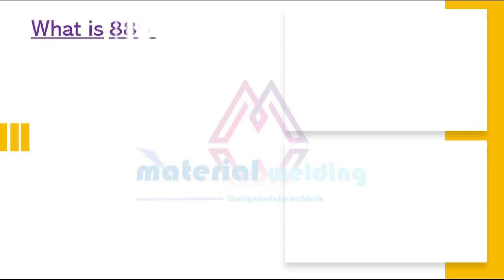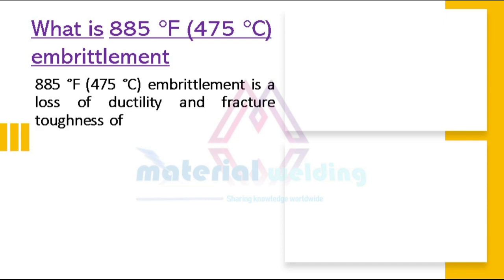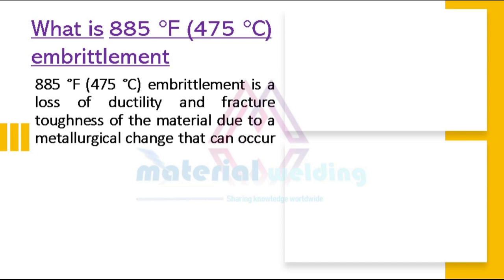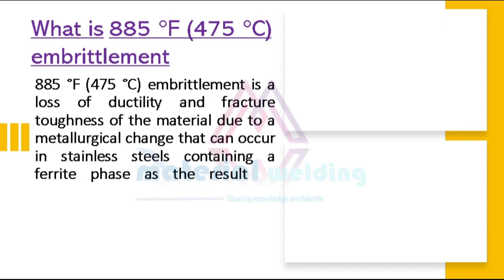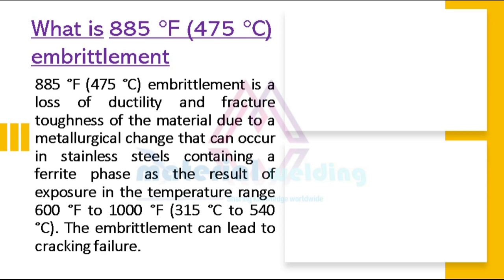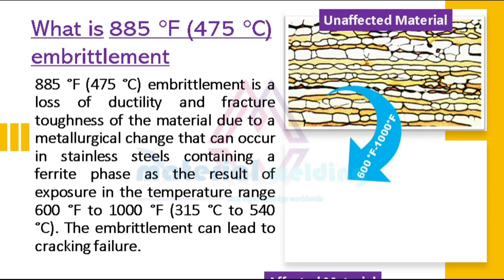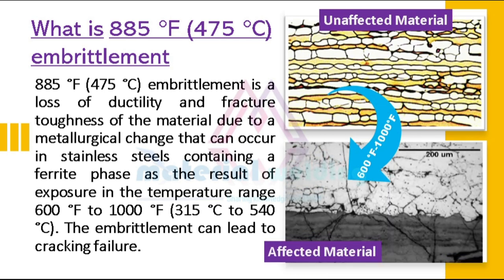So what is 885 degrees Fahrenheit or 475 degrees Celsius embrittlement? It is a loss of ductility and fracture toughness of the material due to a metallurgical change that can occur in stainless steels containing a ferrite phase, as the result of exposure in the temperature range 600 degrees Fahrenheit to 1000 degrees Fahrenheit, or 315 degrees Celsius to 540 degrees Celsius.